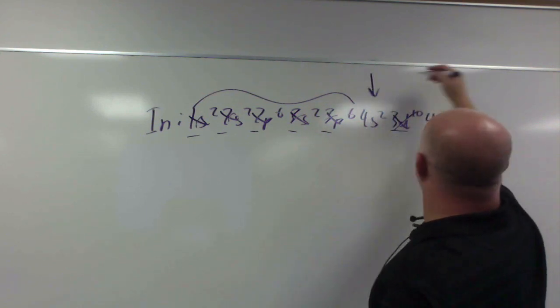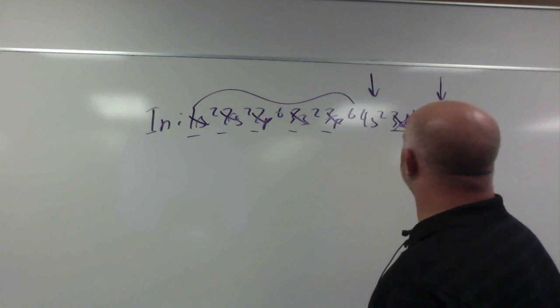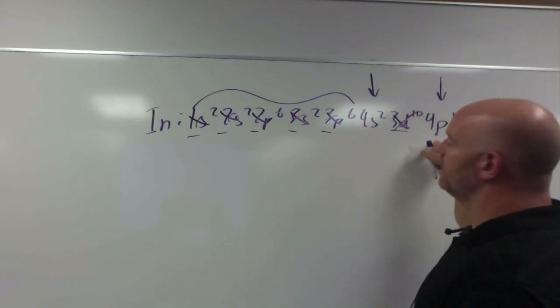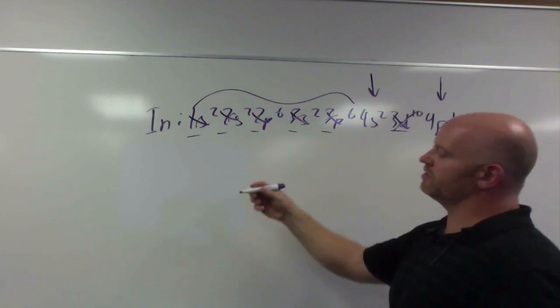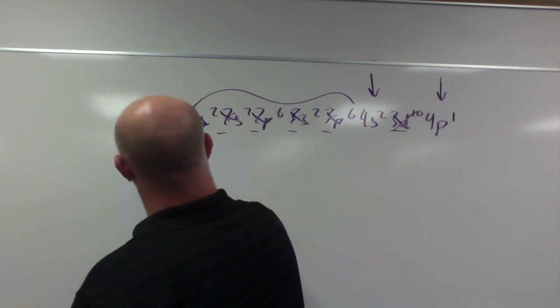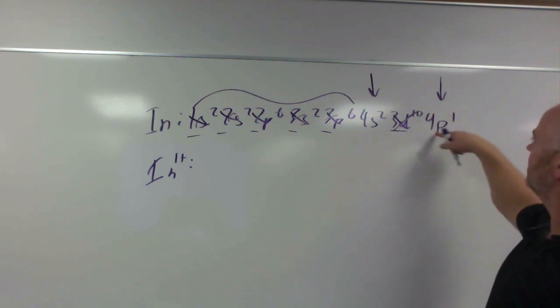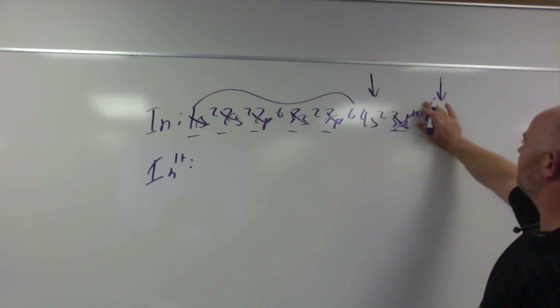However, we do have two different sets of electrons in the fourth energy level. And if we look, if indium is going to be a 1 plus, well, it can just take away this electron here from the p orbital.